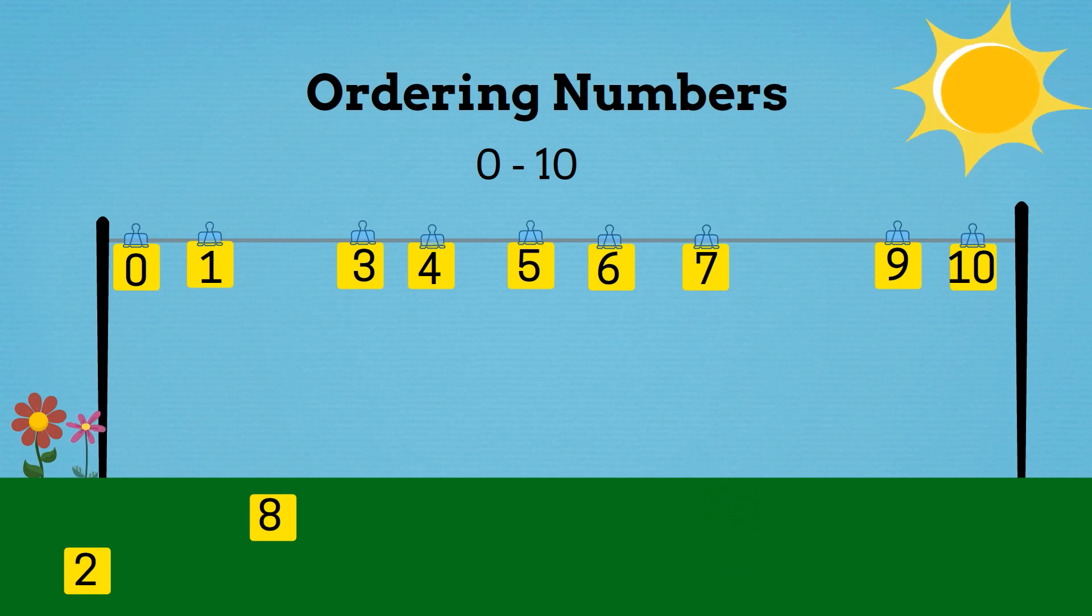Now we've got 2 numbers left. Which of them go between 1 and 3? It's 2. 2 is 1 more than 1 and 1 less than 3. So we'll put 2 in between 1 and 3.